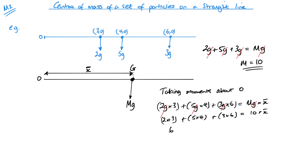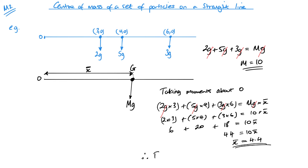So 2 threes are 6, 5 fours are 20, 3 sixes are 18. That equals 10 x-bar. So 6 plus 20 plus 18 is 44. X-bar equals 4.4. Therefore, the center of mass is at 4.4, 0.